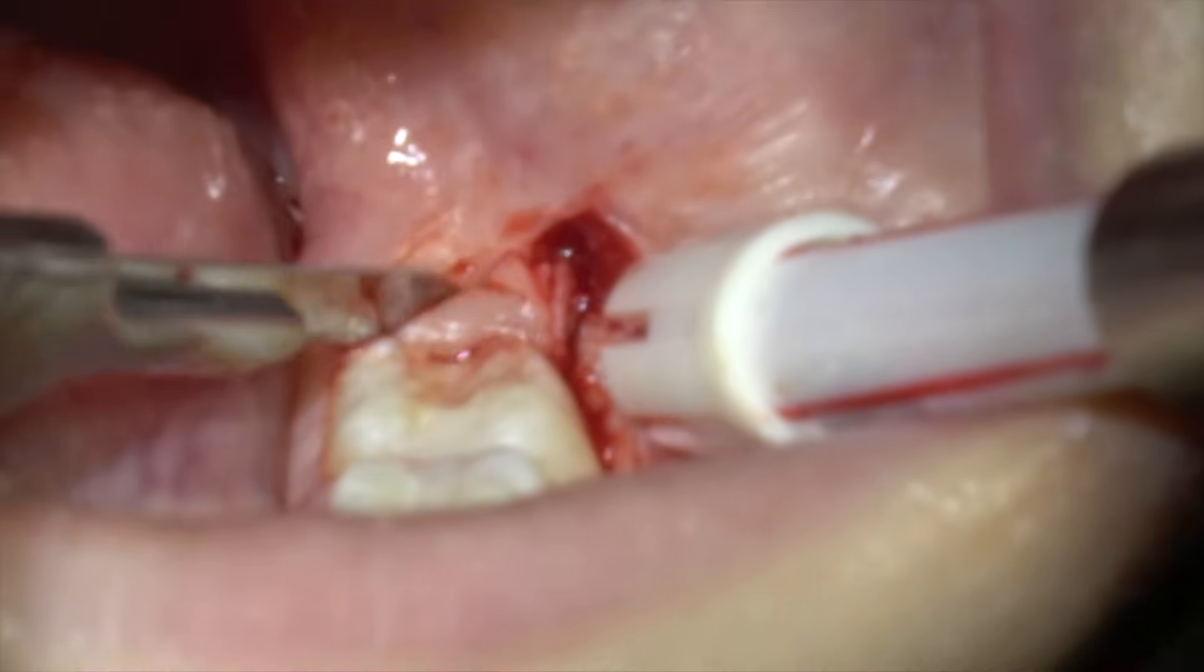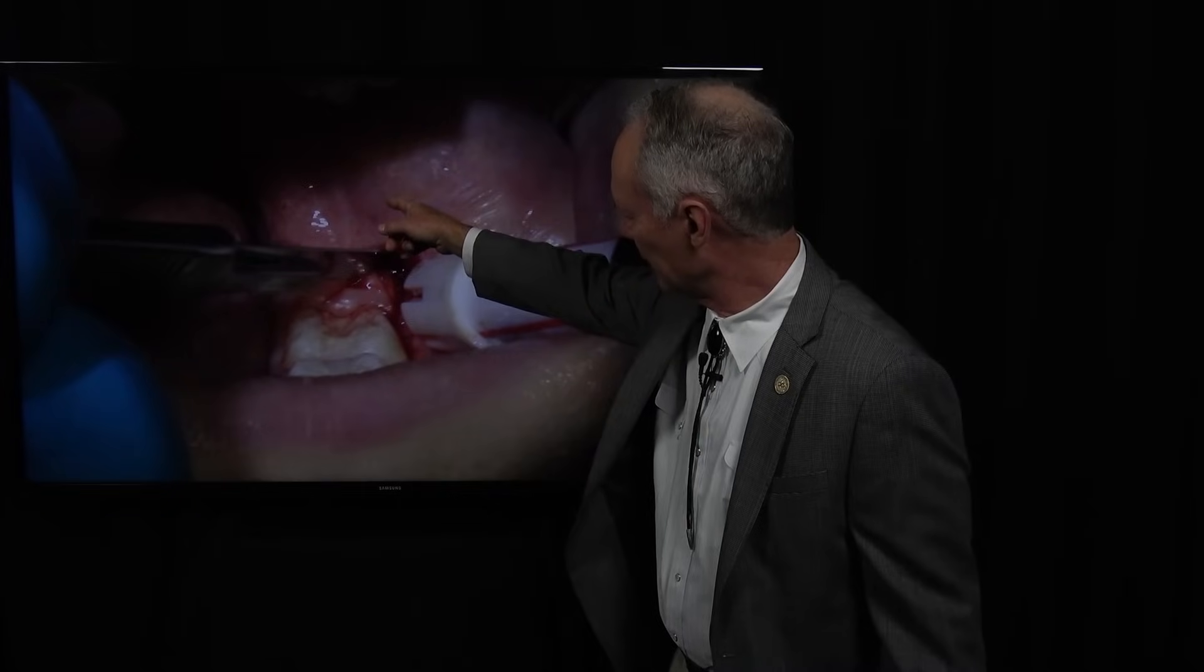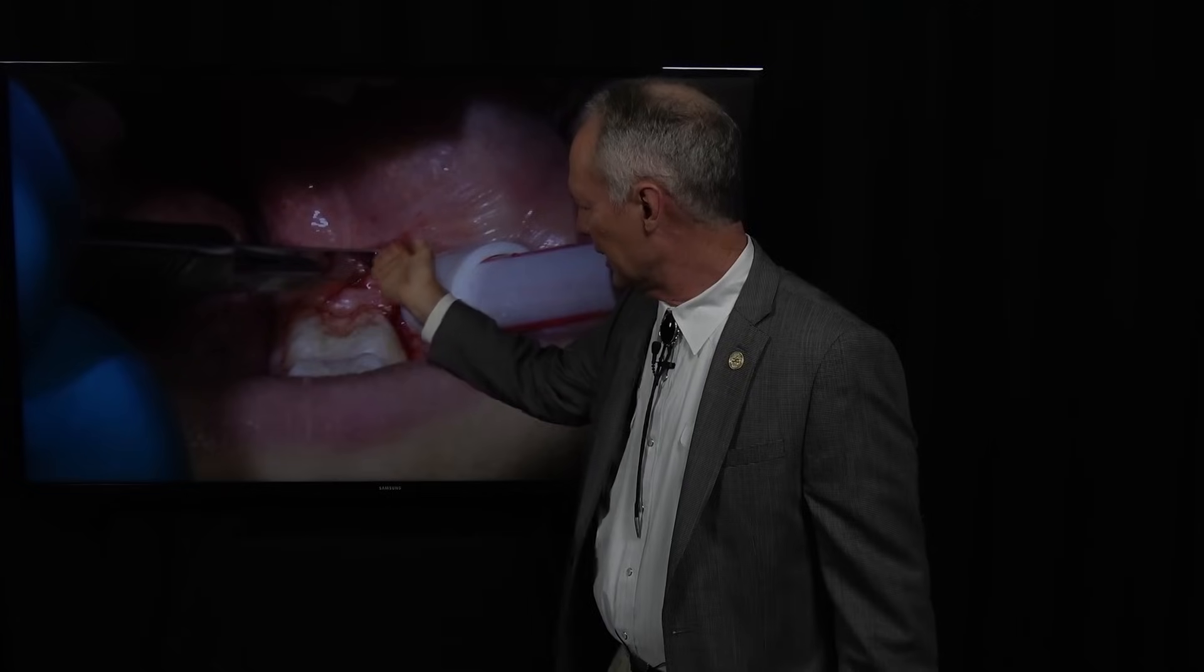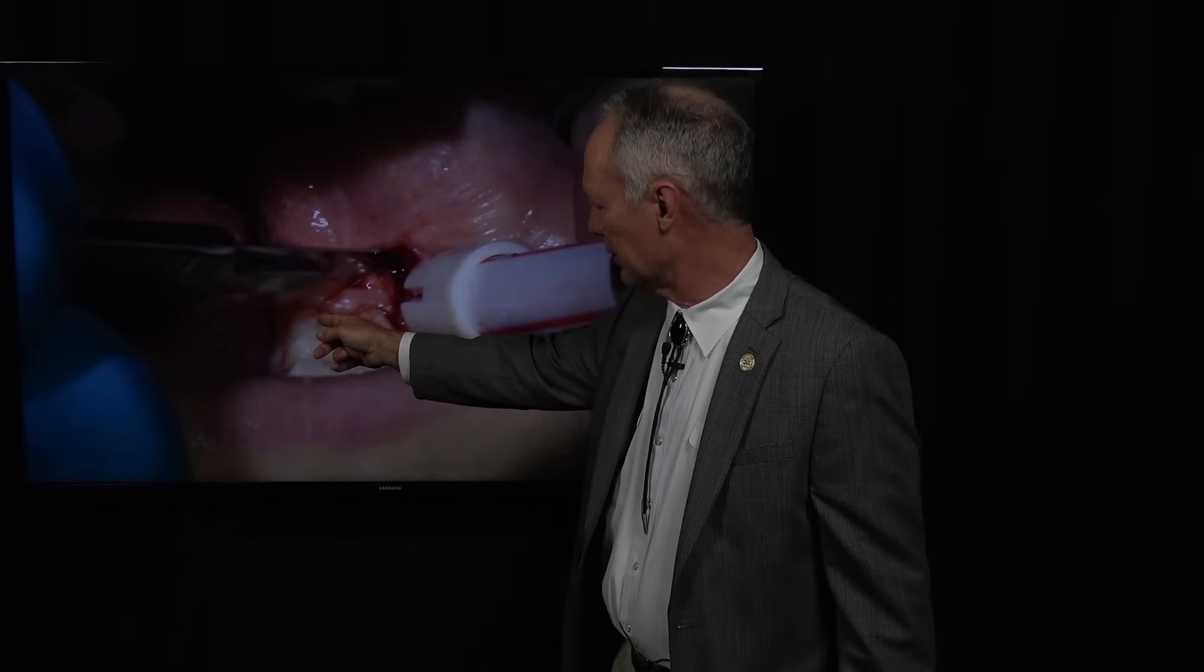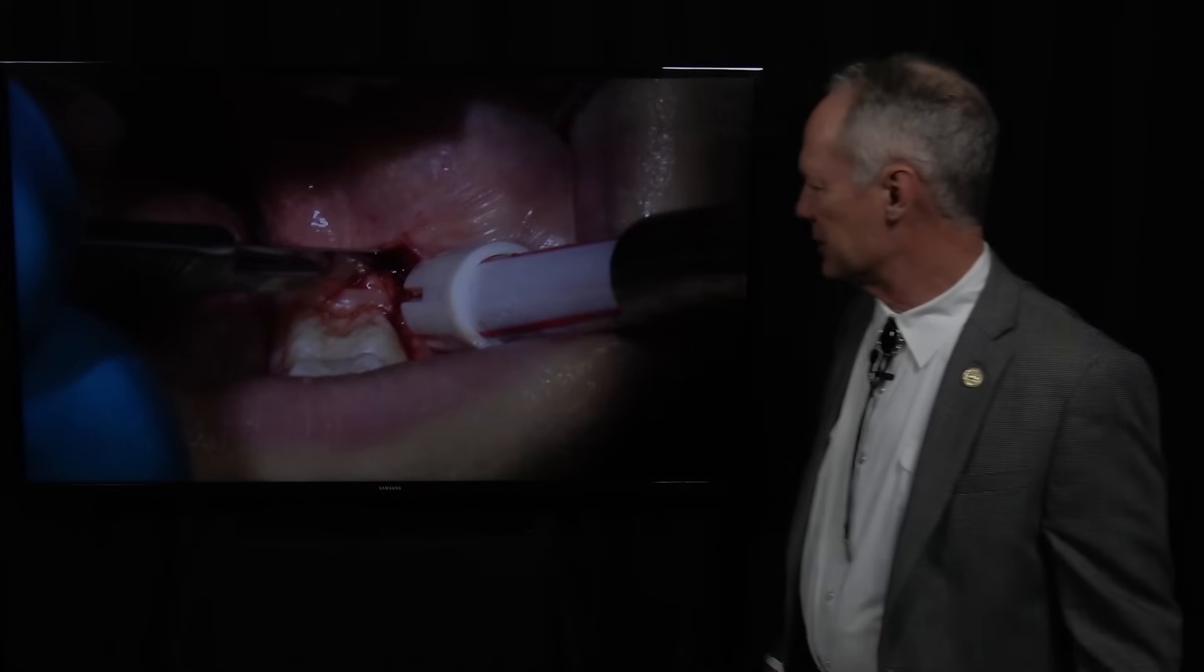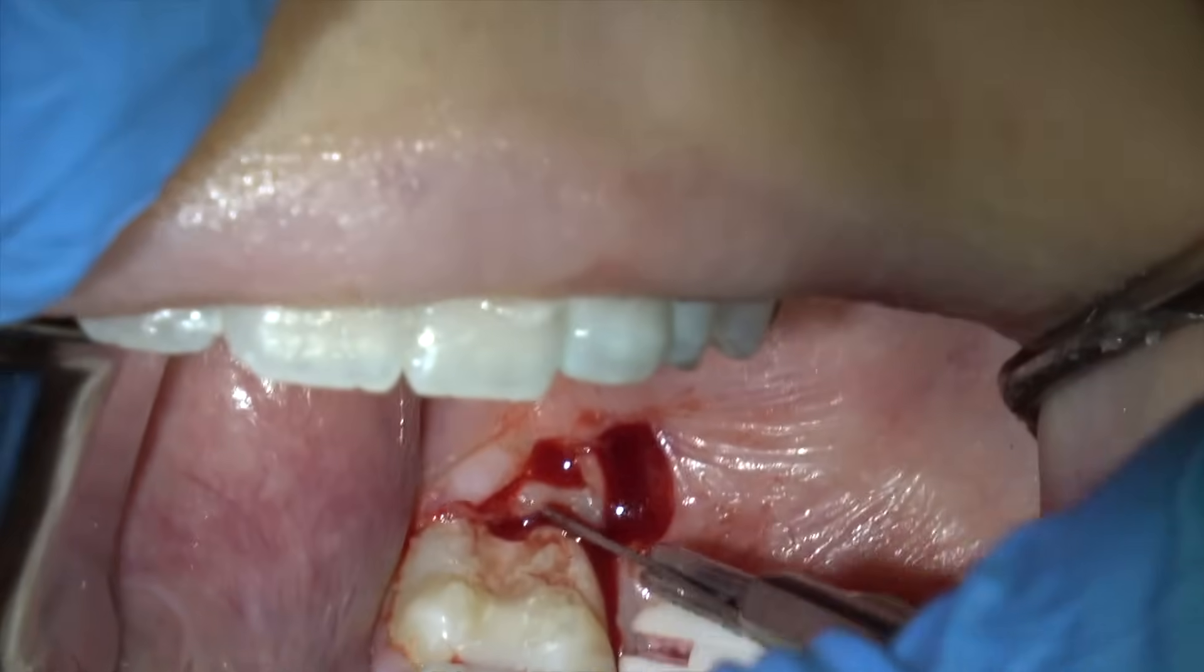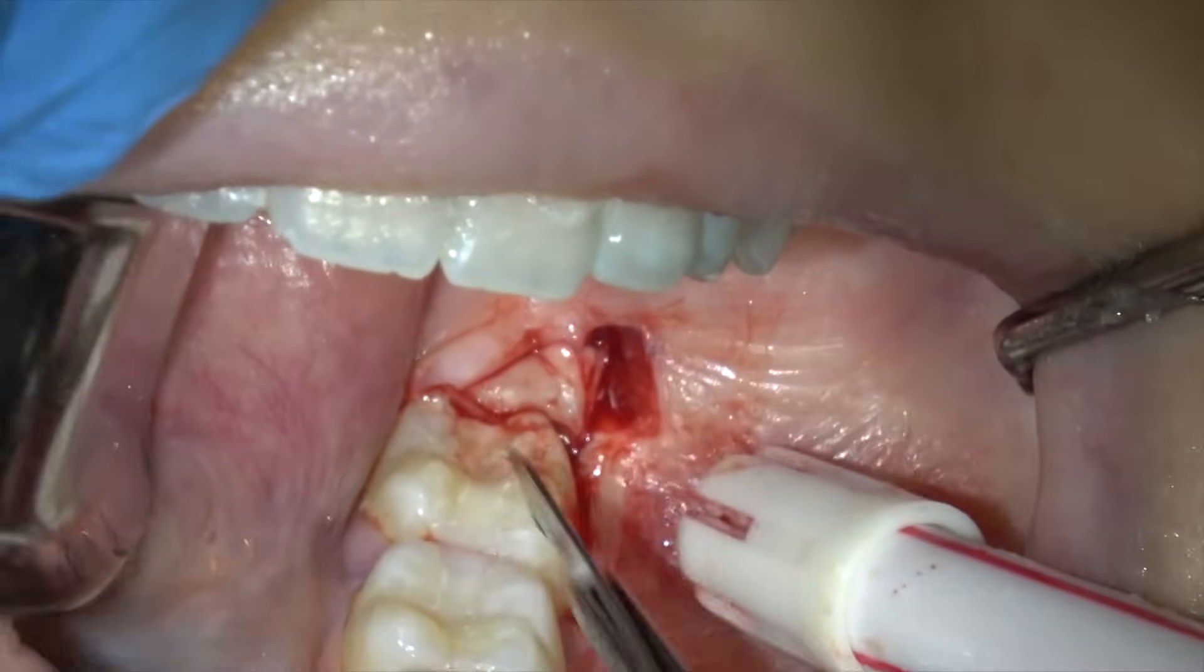So here's the incision. You incise back into the retromolar area all the way to bone and then make another cut to the distal lingual of the second molar. Cut all the way to bone and then you're going to cut just distal to the second molar, creating a wedge and you'll remove that piece with your rongeurs.